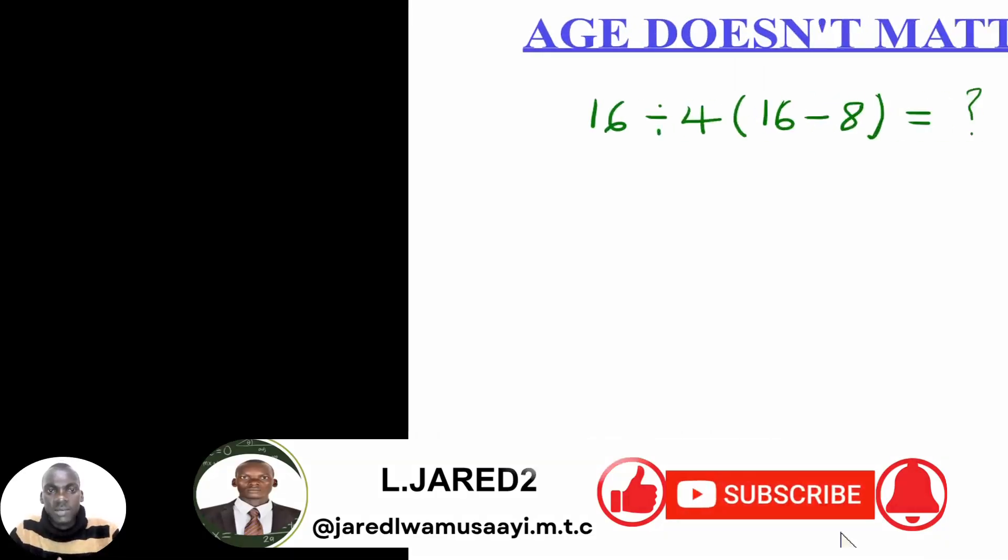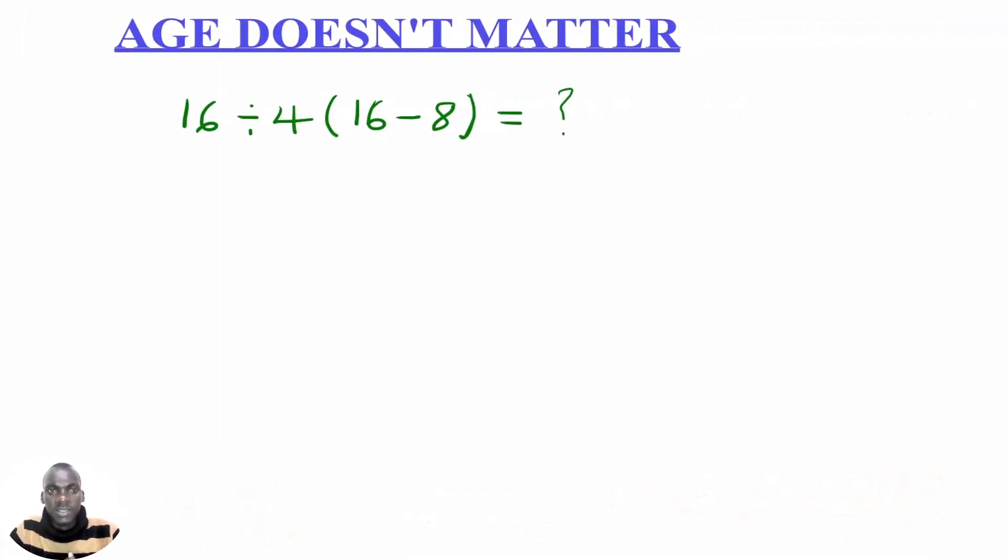Let us now dive in. Today's math trick question: we are saying that the age doesn't matter. We have our equation here saying 16 divided by 4 into the 16 minus 8 equals to our question mark.